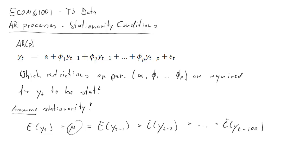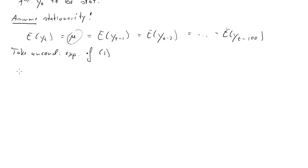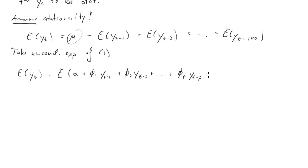So we'll call the AR(p) equation 'equation 1' and take the unconditional expectation of it. That means E[y_t] equals the expected value of the right-hand side: alpha plus phi_1 y_{t-1} plus phi_2 y_{t-2}, all the way back to phi_p y_{t-p}, plus the error term epsilon_t. Then we close the expectation.